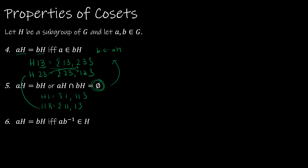Property 6: AH equals BH if and only if AB inverse is in H. Multiplying AH on the left by A inverse gives H equals A inverse BH, so A inverse B must be an element of H.